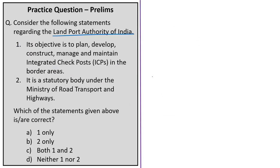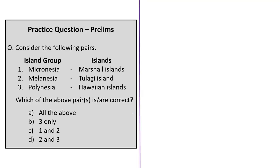The twenty-fourth question is about the Land Port Authority of India. Statement one says its objective is to plan, develop, construct, manage, and maintain integrated checkposts in border areas — correct. Statement two says it is a statutory body under the Ministry of Road Transport and Highways — partially correct that it is a statutory body (established by the Land Ports Authority of India Act), but it is under the administrative control of the Department of Border Management, Ministry of Home Affairs, not Road Transport. The correct answer is option A: one only.